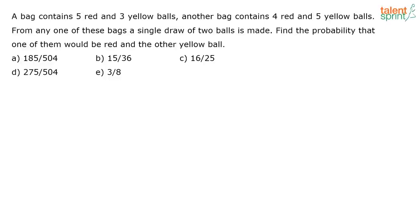A bag contains five red and three yellow balls. Another bag contains four red and five yellow balls. From any one of these bags, a single draw of two balls is made. Find the probability that one of them would be red and the other would be yellow.